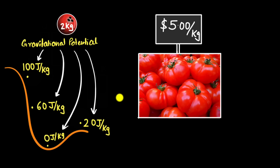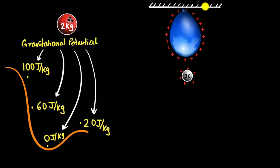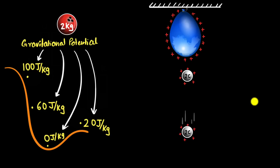We do something very similar with electric potential energy and define something called electric potential. We have a charged balloon fixed to a ceiling, and close to it a tiny styrofoam with two coulombs of positive charge. If we ignore gravity, because of the repulsive force, the charge will accelerate down, speeding up as it goes, gaining kinetic energy. How much kinetic energy has it gained?